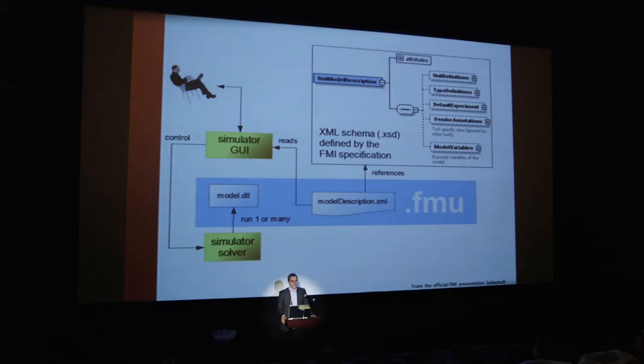The second FMI variant is FMI for co-simulation, which reuses as much as possible from FMI for model exchange in terms of how the metadata about the model is handled. The key difference is that the solver moves from being in the tool into the FMU, which makes quite an important difference and leads to very different use cases for how the FMI standard can be used.